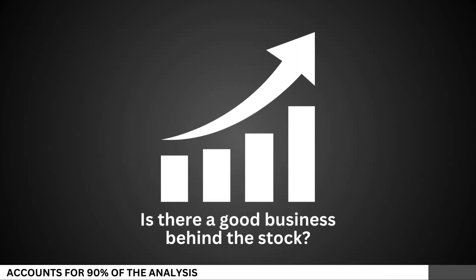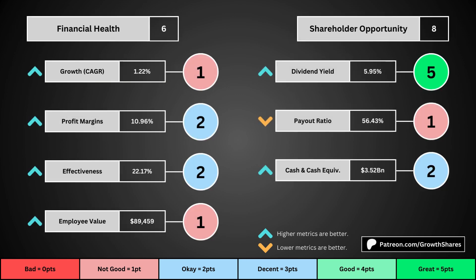We'll look at 14 metrics to determine the business fundamentals. The first set of metrics deal with the company's financial health: its projected earnings growth for the next five years, its profit margins, its effectiveness — which looks at the company's returns on equity, assets, and invested capital — and then the employee value, which looks at how much value the average employee adds to the business. You can see the values for each of these metrics, as well as the point totals awarded in the bubbles.